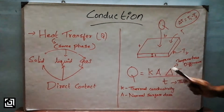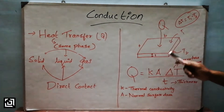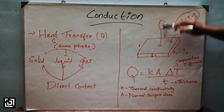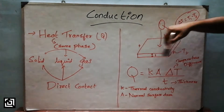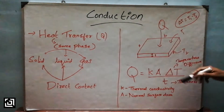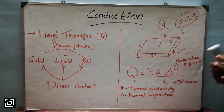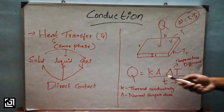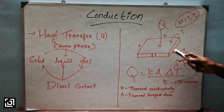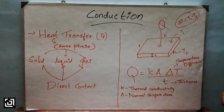The second factor is area A — the perpendicular surface area. If the area increases, heat transfer increases. Heat transfer is directly proportional to the cross-sectional area.